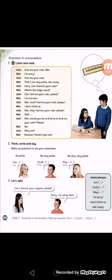Mel says: 'I'm not sure.' Jack tries again: 'Mel, could I borrow your ruler, please?' Mel says: 'I don't think so.' Jack then says: 'Mel, may I borrow your ruler, please?' — 'may I' being the most polite. Mel finally responds: 'No, Jack.' Jack asks why, and Mel says: 'Because I haven't got one.'